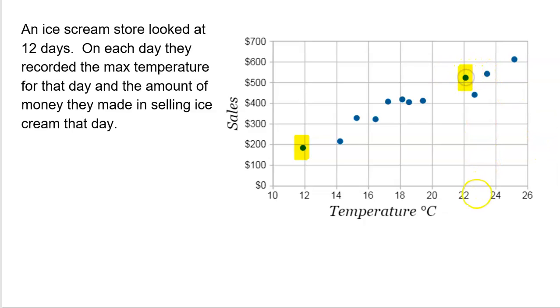On this day right here, the temperature was right around, max temperature right around 22 degrees Celsius, and they sold maybe $520 that particular day. So, again, which is the explanatory variable? Well, I don't care what you think or what you don't think. It's on the x-axis, so there is temperature. That's the explanatory variable.